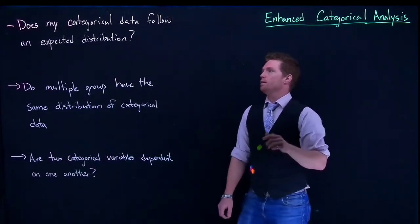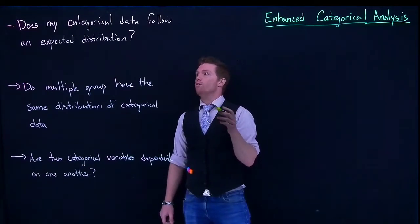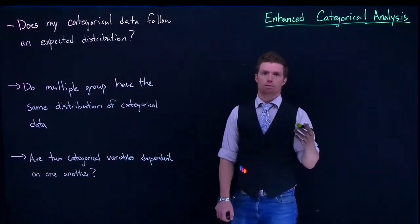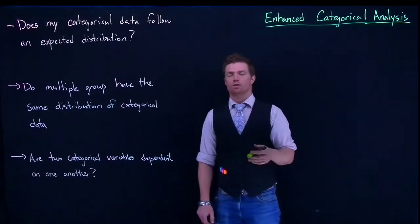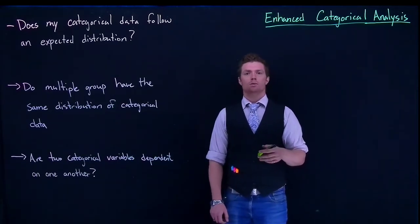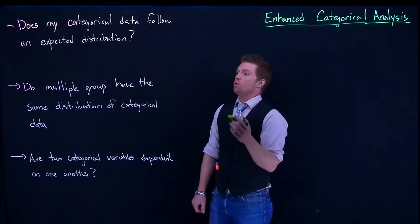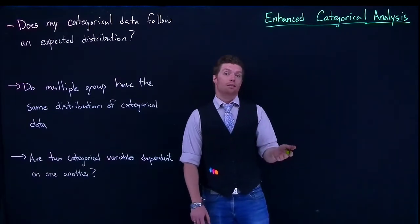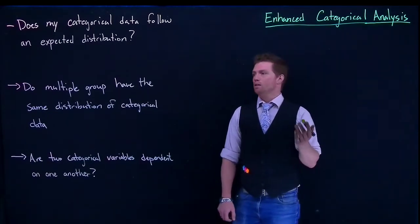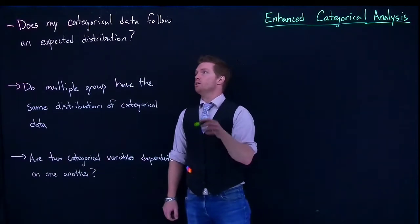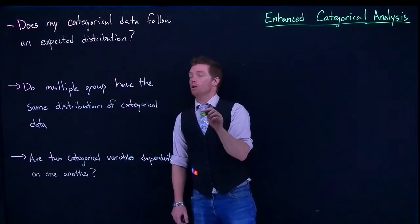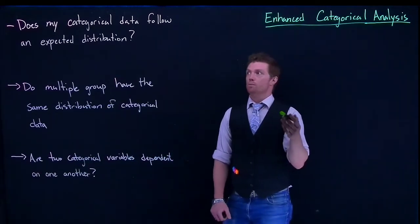For the first one, does my categorical data follow an expected distribution? Suppose we are looking at the ethnic diversity within a specific town. We could look at a census and know what the ethnic diversity is in the United States. Our question could be, does my categorical data follow the distribution from the census?